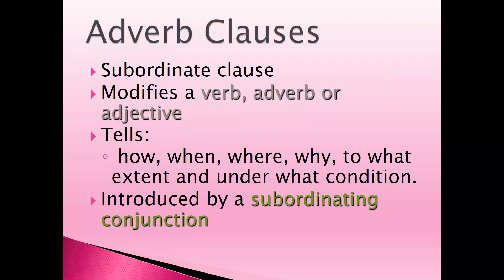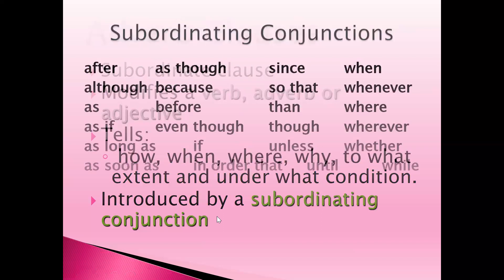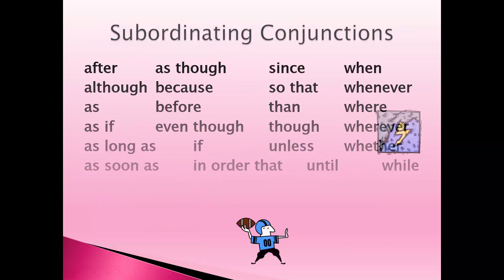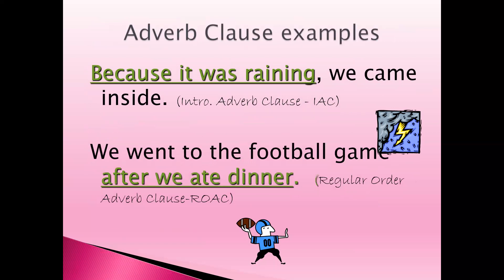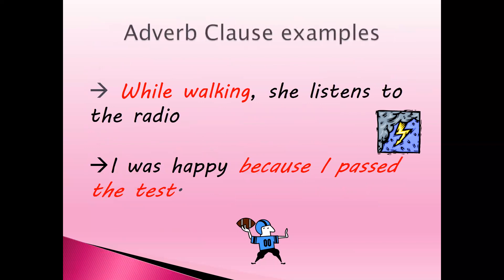The second type of dependent clause is the adverb clause, which is also part of the subordinate clause. Like an adverb in parts of speech, an adverb clause modifies verbs, adjectives, or other adverbs — telling us how, when, where, why, to what extent, and under what conditions. An adverb clause is introduced by a subordinating conjunction. Examples: 'Because it was raining, we came inside.' 'We went to the football game after we ate dinner.' 'While walking, she listens to the radio.' 'I was happy because I passed the test.'